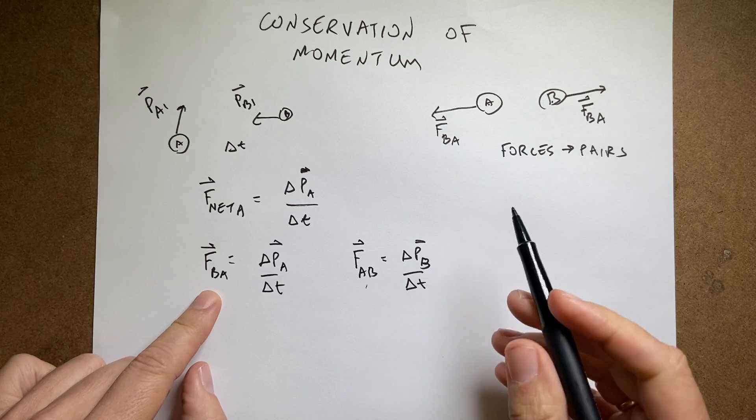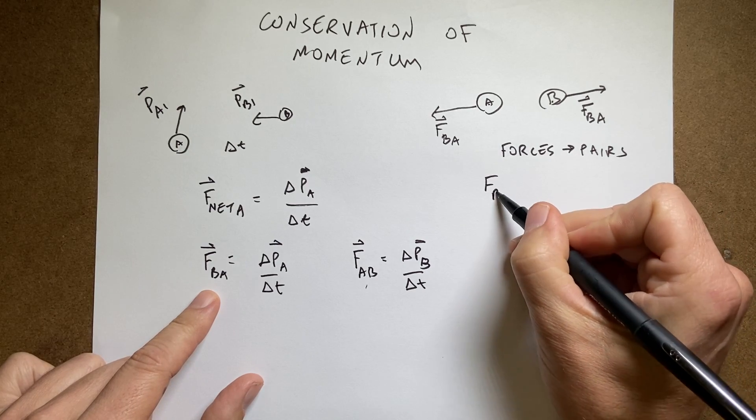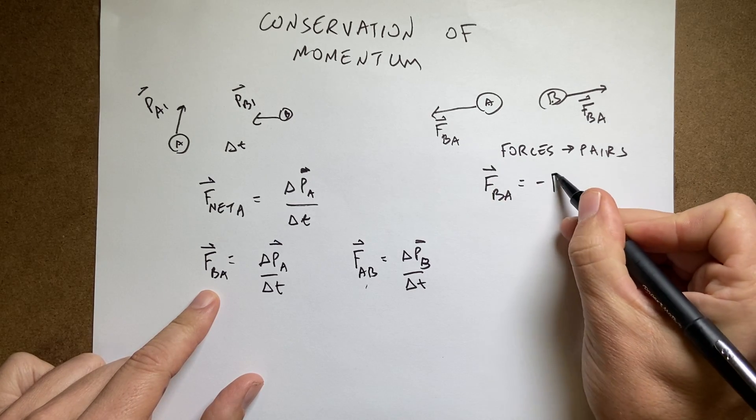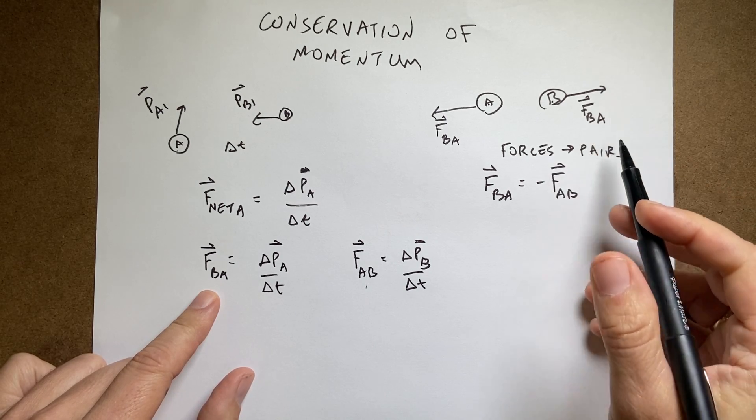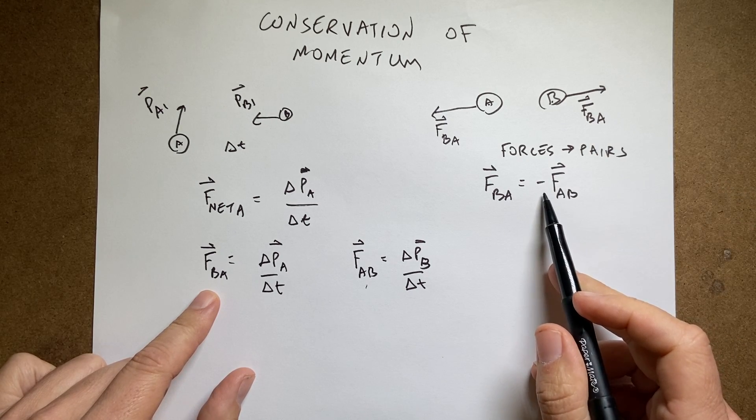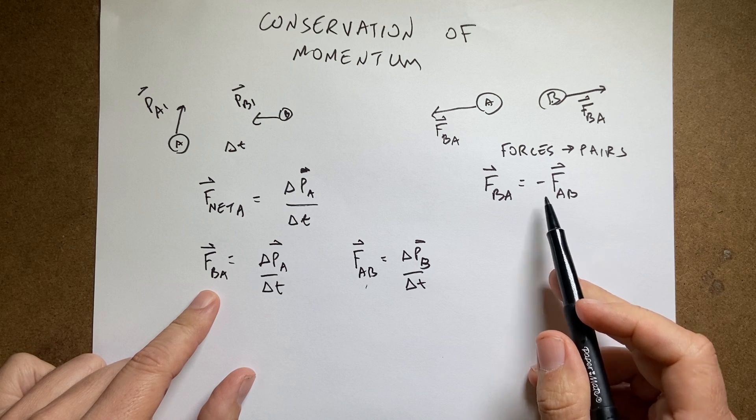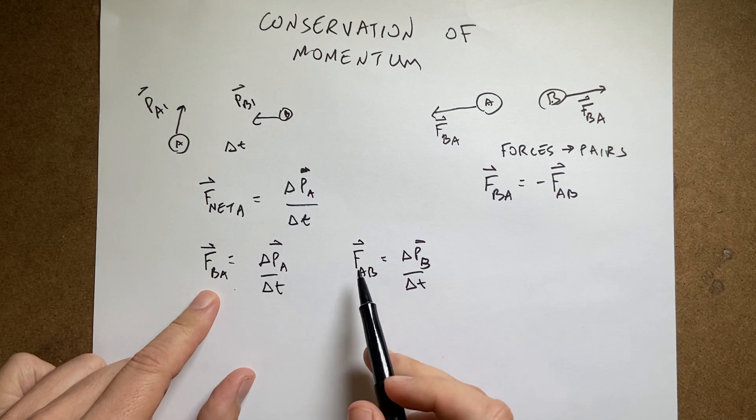But, these two, I can also write FBA is equal to negative FAB. They're the same magnitude but opposite direction, so I can do that. So, I can put this in over, I can do one of these.